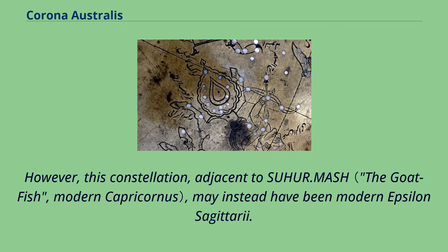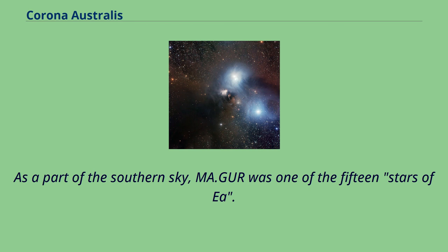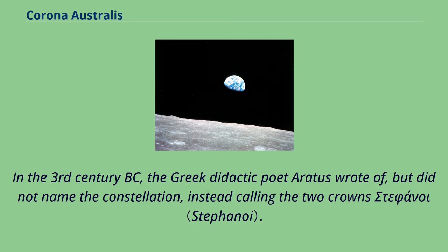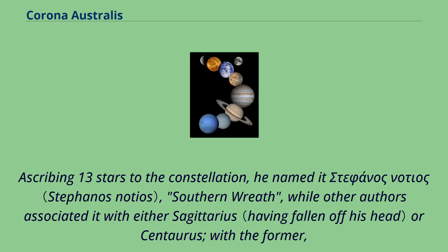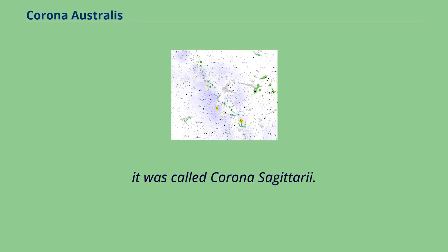In the 3rd century BC, the Greek didactic poet Aratus wrote of, but did not name the constellation, instead calling the two crowns by the Greek term for wreaths. The Greek astronomer Ptolemy described the constellation in the 2nd century AD, though with the inclusion of Alpha Telescopii, since transferred to Telescopium. Ascribing 13 stars to the constellation, he named it the southern wreath, while other authors associated it with either Sagittarius or Centaurus — with the former, it was called Corona Sagittarii. Similarly, the Romans called Corona Australis the golden crown of Sagittarius.